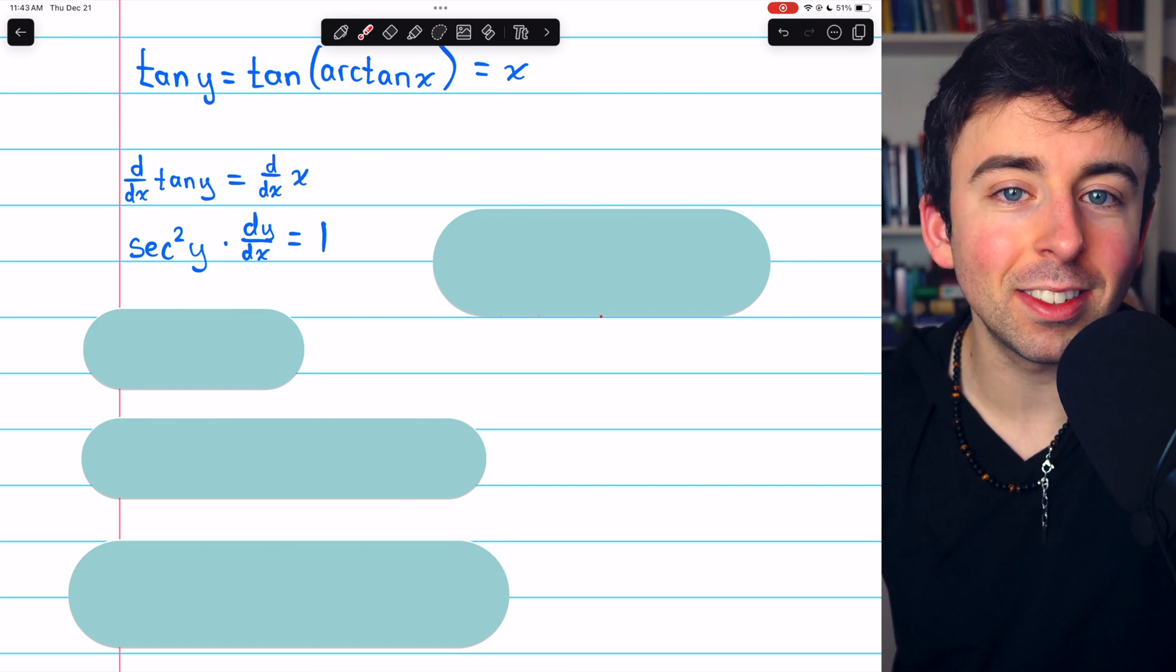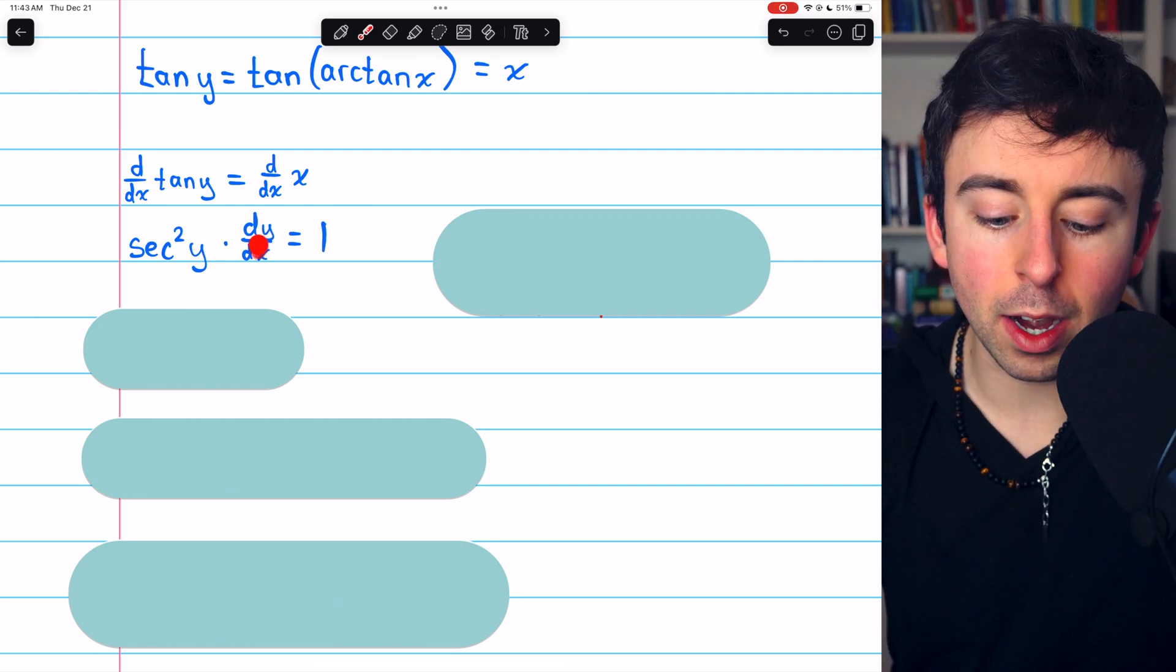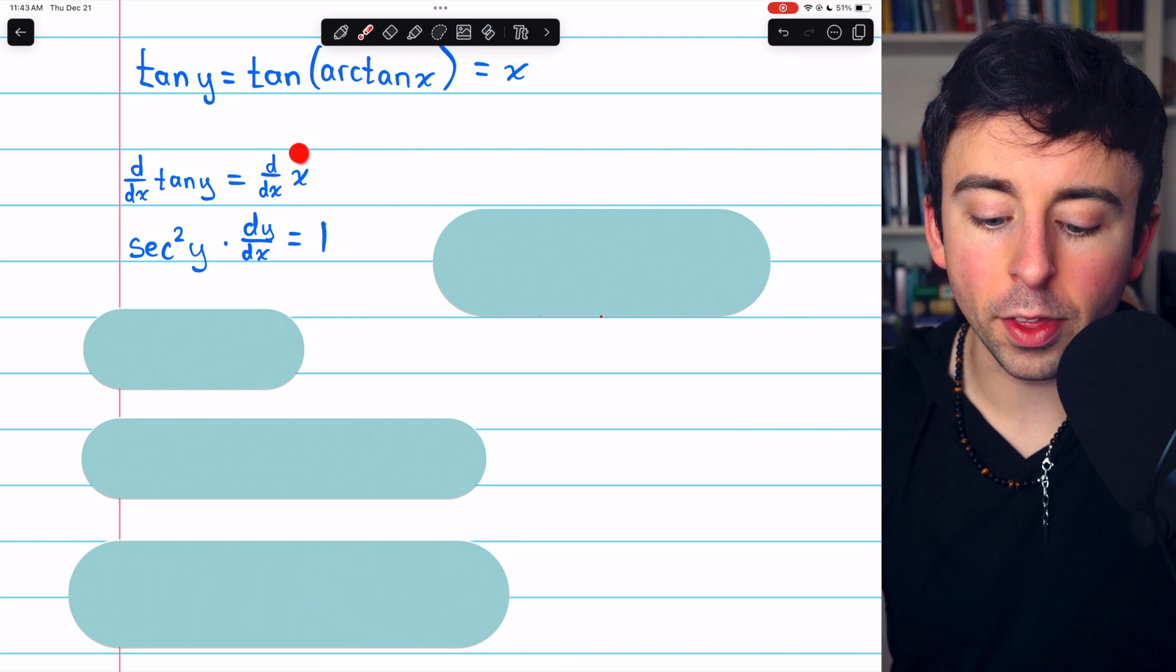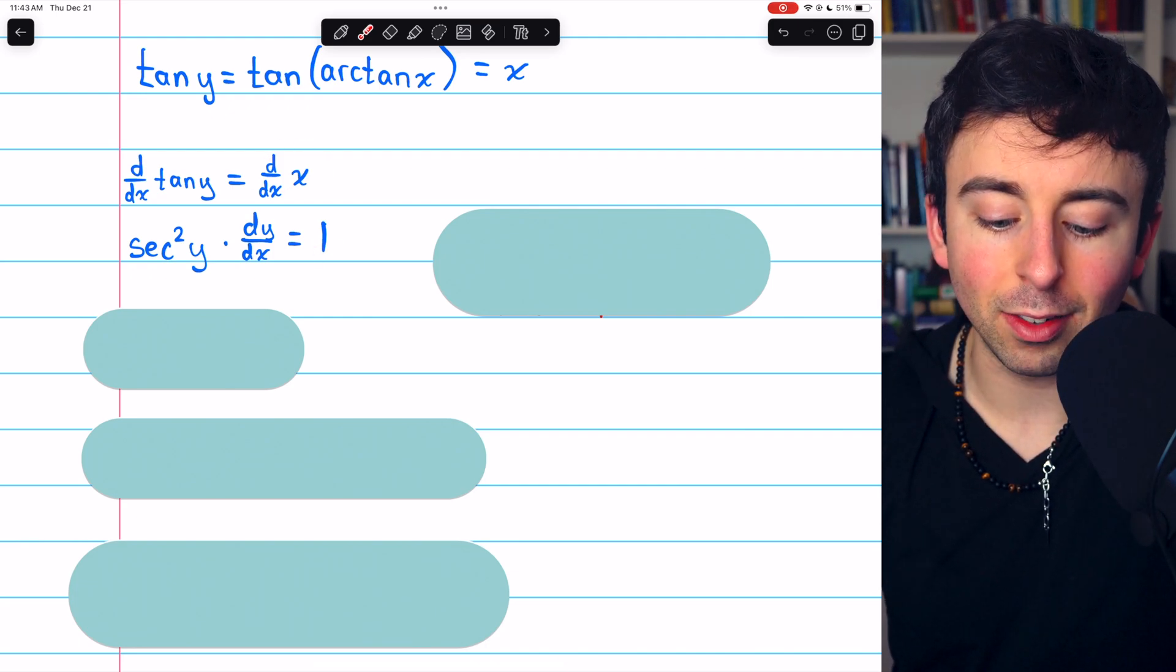because remember, y is an implicit function of x, so you've got to multiply by dy/dx. On the right, the derivative of x is 1.